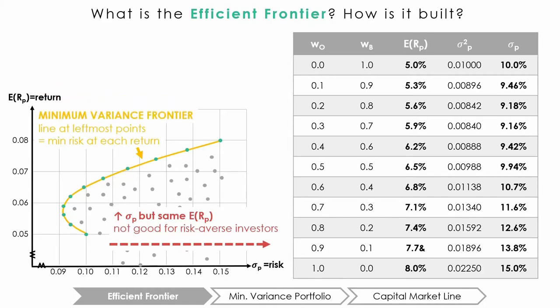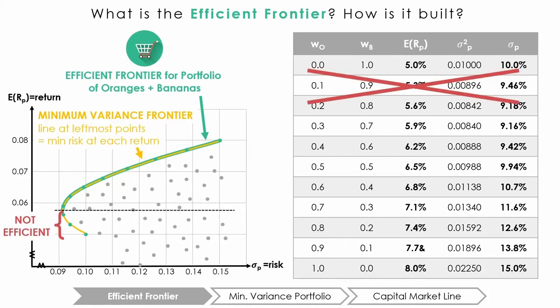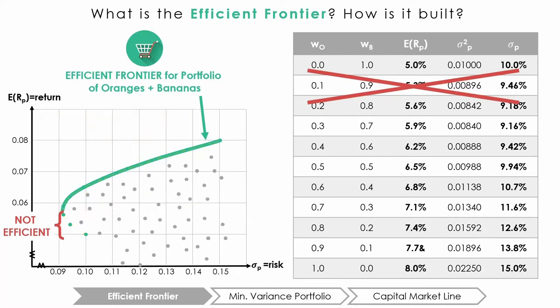This arc is called the minimum variance frontier. The upper part of the arc is called the efficient frontier. The lower part of the arc is not efficient — for each of these points, there is a portfolio on the efficient frontier with the same level of risk that yields a better expected return. Take this portfolio for example: it has a return of around 6% and a standard deviation of around 11.75%. Compared to a portfolio on the efficient frontier with the same standard deviation but a return of 7%, the portfolio earning only 6% is not efficient. As a risk-averse investor, we will always prefer the portfolio that gives us the highest expected return possible for the lowest risk possible, measured as the standard deviation.